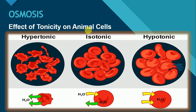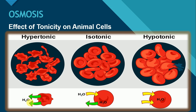Let's see the effect of tonicity on animal cells. We will see the effect on RBCs, or red blood cells, as an example. We will place RBCs in three types of solutions: hypertonic solution, isotonic solution, and hypotonic solution. When RBCs are placed in the hypertonic solution, the water will move out from the cell. Pani sara cell se bahir a jae ga and cell will become shrink.